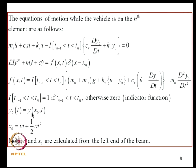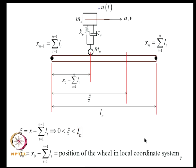We denote by Y_0 the deflection of the supporting structure under the wheel load at position X_0 = VT + 0.5AT², noting that X and X_0 are calculated from the left end of the beam. We make a coordinate transformation: for the nth element of length L_N, we introduce a coordinate XI defined as X − X_{N-1}, so XI lies between 0 and L_N. X_0 in local coordinates is measured from X_{N-1}.